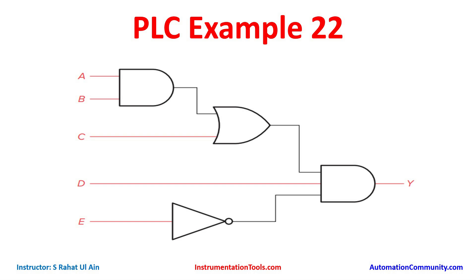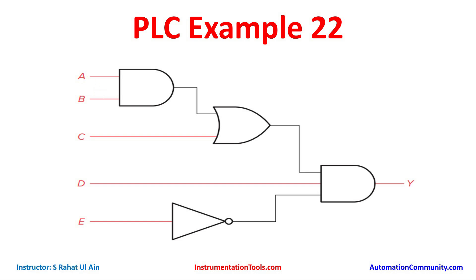For inputs A, B, C, and D we will use normally open contacts, and for input E we will use a normally closed contact because there is a NOT logic gate. We will then implement an AND logic gate between A and B.